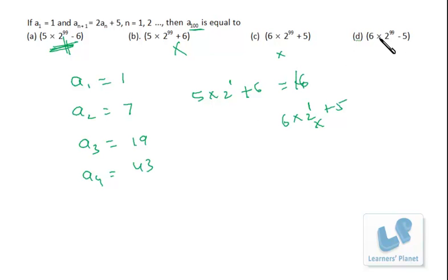Now let's take the fourth option. It's 6 times 2¹ minus 5, that is 6 times 2 is 12 minus 5 equals 7. So it can be the correct choice. Though all three we have rejected, we can be sure that this is the correct choice.